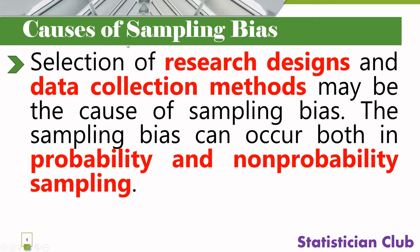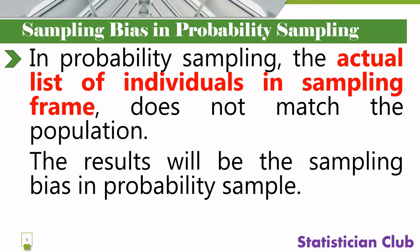Causes of sampling bias: selection of research design and data collection methods are the main causes of sampling bias. Sampling bias is of two types: probability sampling and non-probability sampling. In other words, bias occurs in both probability sampling and non-probability sampling, which we will discuss in further slides.